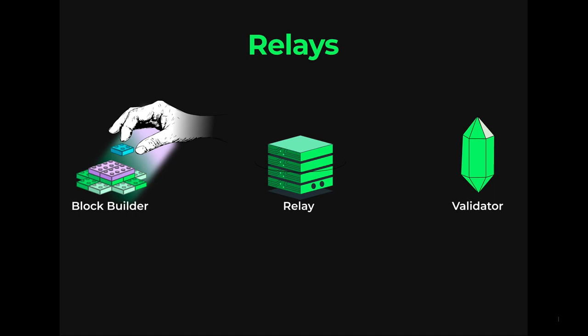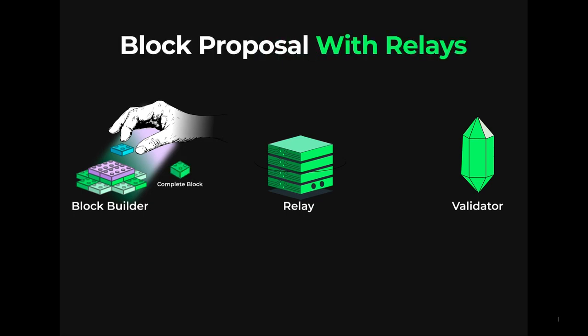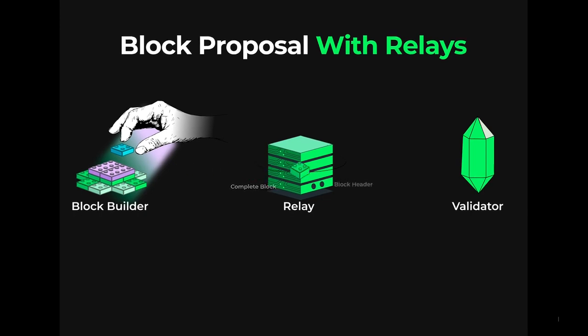Let's walk through how the block proposal process looks when using a relay. First, block builders send their block bundles to the relay. The relay then chooses the highest tipping block and ensures that the validator gets that tip. Relays connect the block bundle with the validator that has chosen to propose a block, and they provide the validator with just a block header to conceal the block's content.